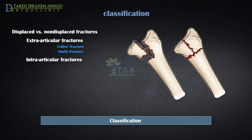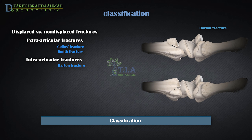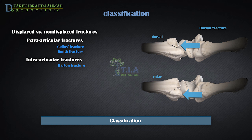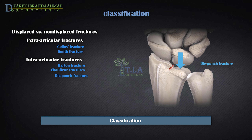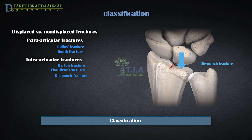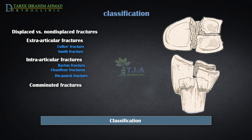An intra-articular fracture is one that extends into the wrist joint. The most common intra-articular fracture is Barton's fracture — a fracture in the coronal plane of the radius that extends into the wrist joint, described as volar or dorsal depending on which rim is involved. There is usually associated subluxation or dislocation of the radiocarpal joint. Chauffeur fractures are intra-articular fractures of the radial styloid process. A die punch fracture is a depressed fracture of the lunate fossa of the articular surface of the distal radius. When a bone is broken into more than two pieces, it is called a comminuted fracture.